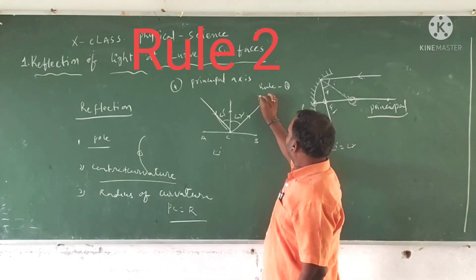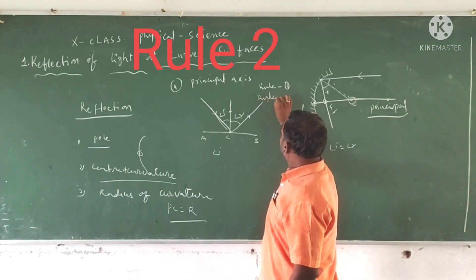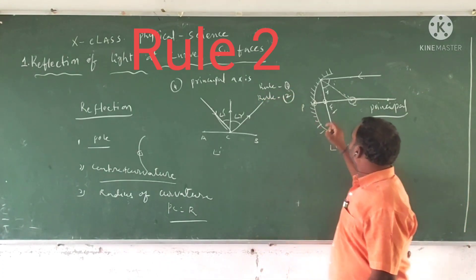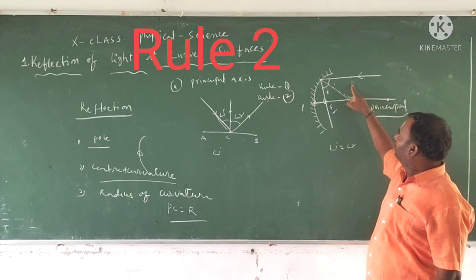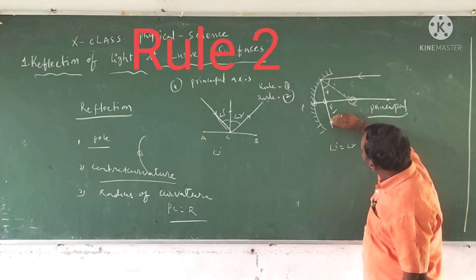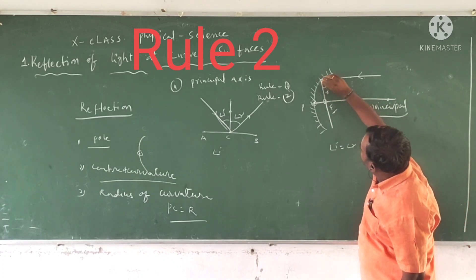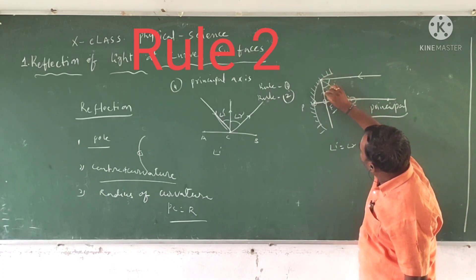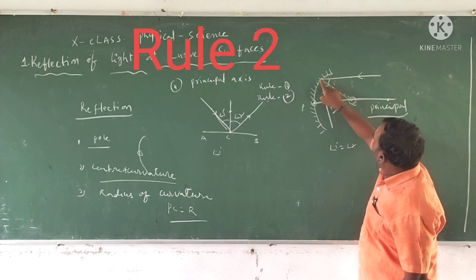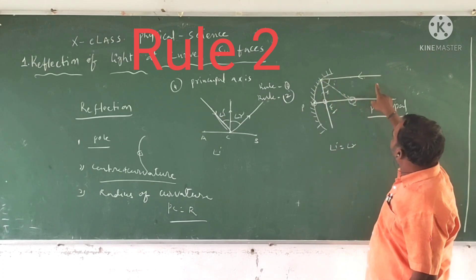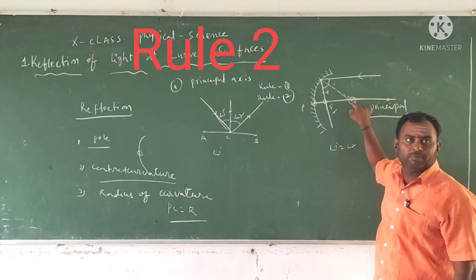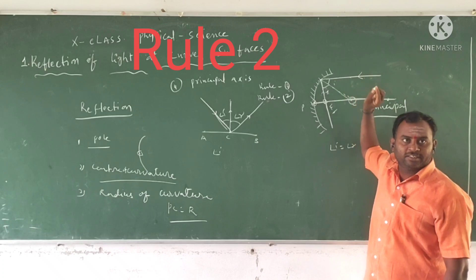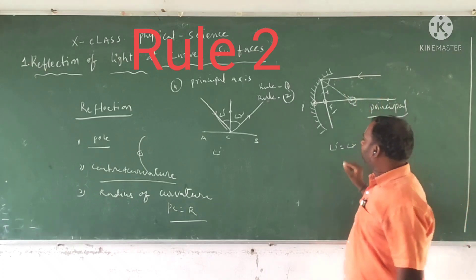Rule two is the opposite to rule one. Any ray passing through the focus, incident on a concave surface, after reflection it travels parallel to the principal axis.